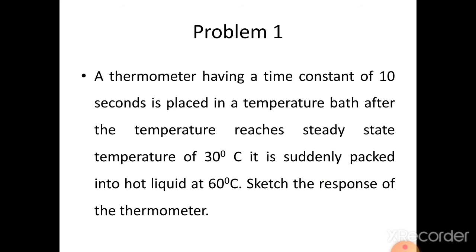Problem 1: A thermometer having a time constant of 10 seconds is placed in a temperature bath. After the temperature reaches a steady state of 30 degrees centigrade, it is suddenly placed into hot liquid at 60 degrees centigrade. Sketch the response of the thermometer. This is a first order dynamics problem — the thermometer behaves as a first order system. The time constant is given as 10 seconds and the steady state temperature is 30 degrees centigrade.